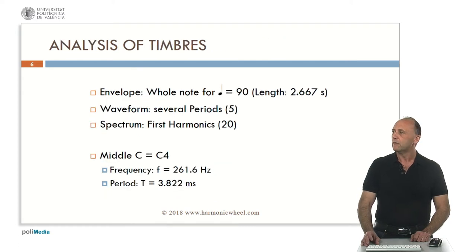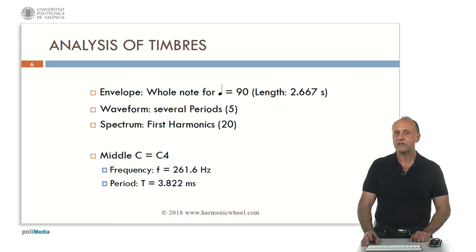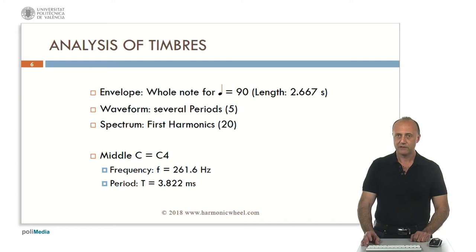To analyze the timbre, we will consider a whole note for a tempo of quarter note equal to 90. Then the whole note will have a length of 2.667 seconds. We will represent 5 periods of the waveform and the first harmonics, typically 20 and sometimes more. As a reference, the middle C on a piano is C4, which frequency is 260 hertz and the period 3.8 milliseconds.